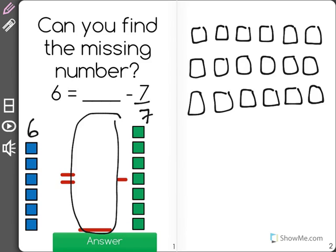I know that we take away 7 and end up with 6, so I'm going to start by taking away 7. 1, 2, 3, 4, 5, 6, 7.